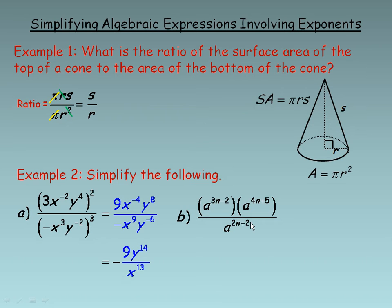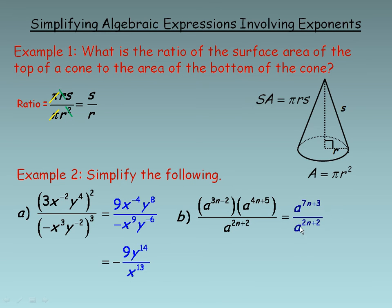For part b, I am going to multiply the two powers of a in the numerator. They have the same base, so I can combine them into one power by adding the exponents: 3n plus 4n is 7n, and negative 2 and 5 add to 3. Now I am dividing — that is what the horizontal line means — and since they are powers of the same base, I subtract the exponents: 7n take away 2n is 5n, and 3 take away 2 is 1. So this simplifies to a to the 5n plus 1.